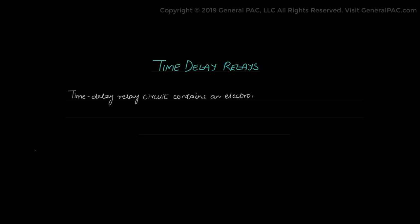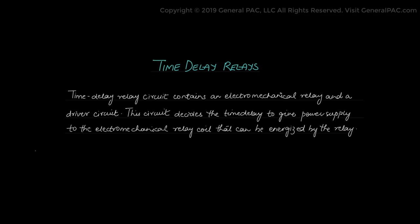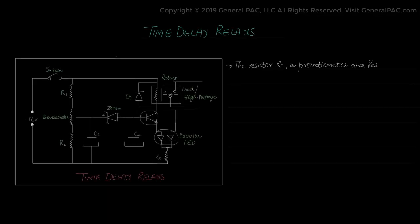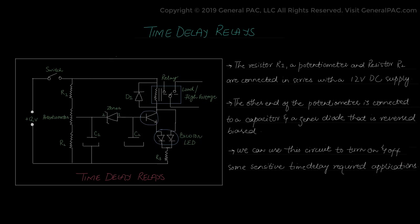The next type of relay is a time delay relay. The time delay circuit contains an electromechanical relay and driver circuit, which decides the time delay to give a power supply so the electromechanical relay coil can be energized. In the working mechanism, there is a resistor R1 and a potentiometer R2 connected in series with a 12V DC input supply, and the other end of the potentiometer is connected to a capacitor and a reverse-biased Zener diode. This circuit can be used to turn on or turn off sensitive time delay required electrical applications.